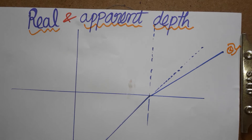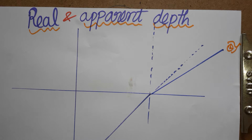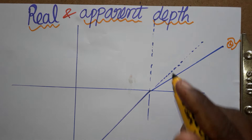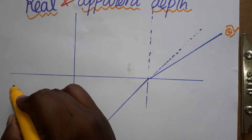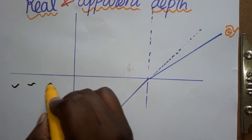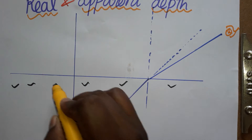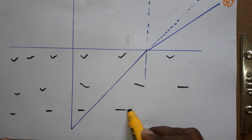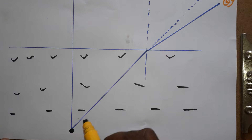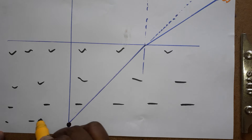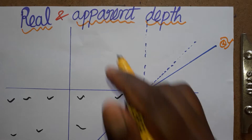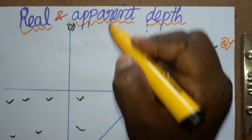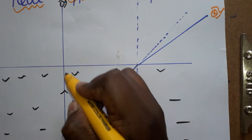Today we are going to see real depth and apparent depth derivation — the relation between real depth, apparent depth, and refractive index. Imagine some coin or object is present inside the water. When we are looking at perpendicular, there is no deviation; the light path will travel straight.